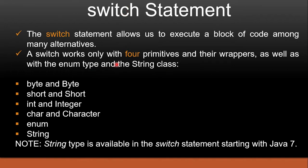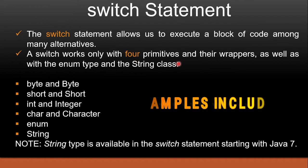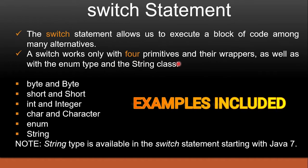Switch works only on four primitive data types and their wrapper classes, as well as it works with enumeration and string classes. String class has been added from JDK 7 and enumeration has been added from JDK 5. So if you are using any version before 7, then string data type is not going to work.